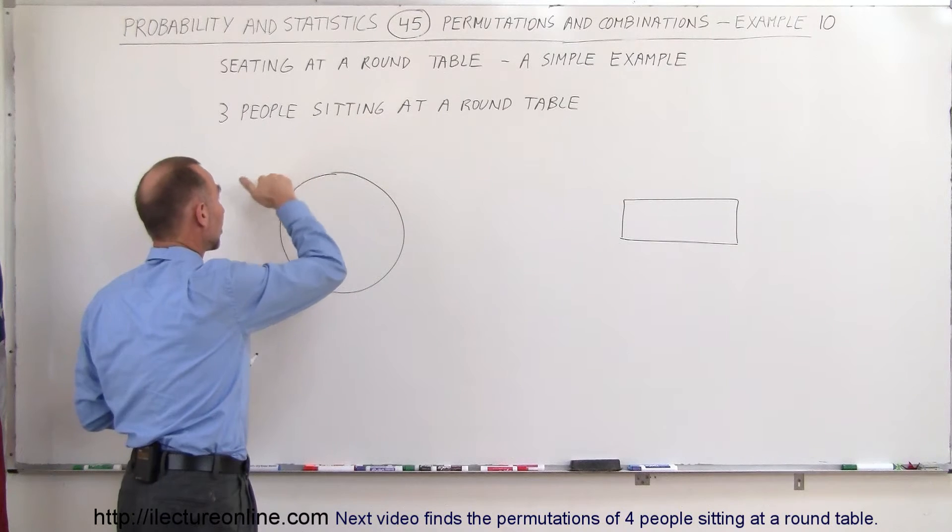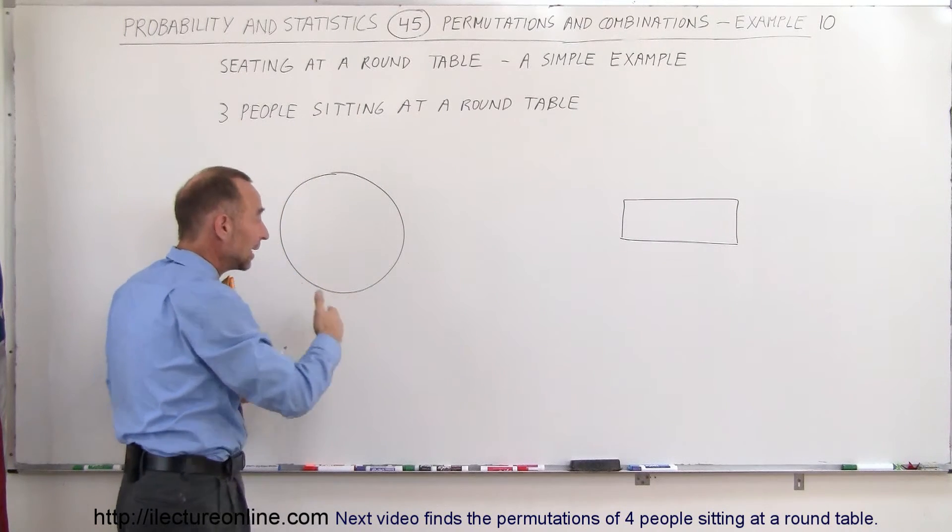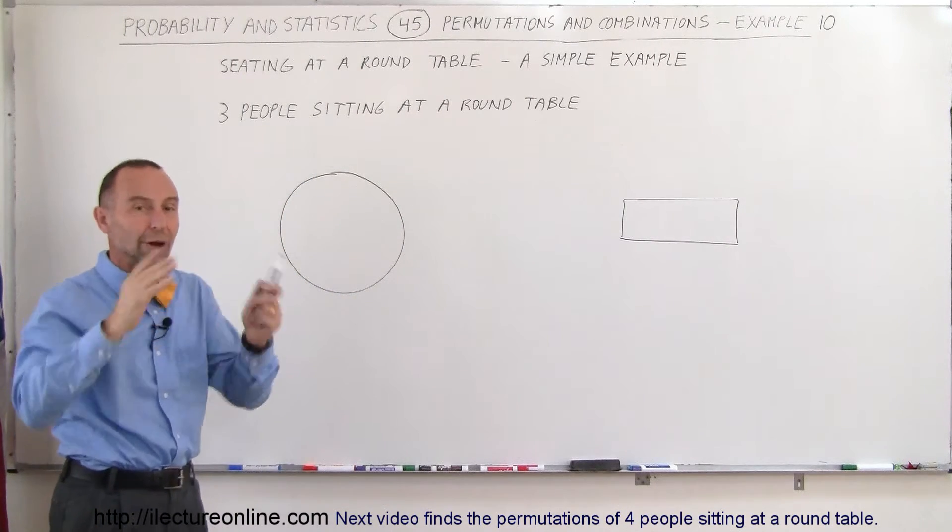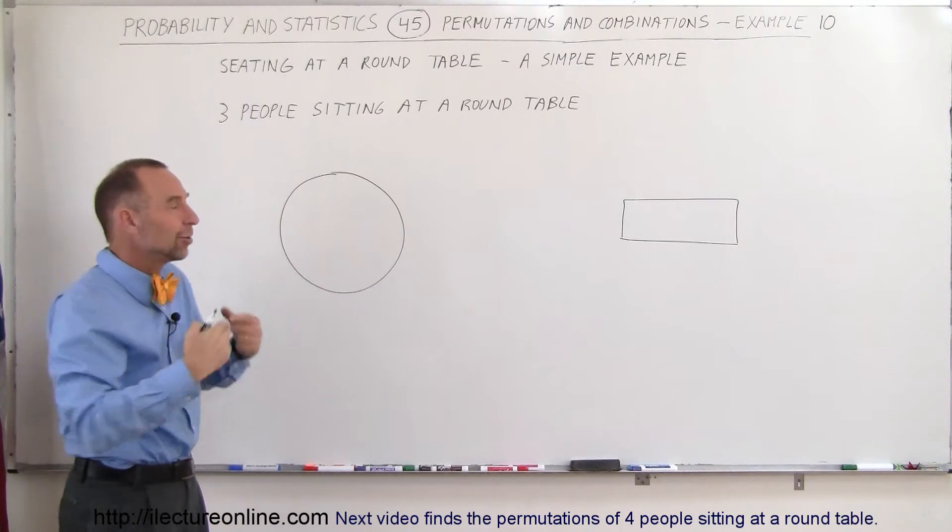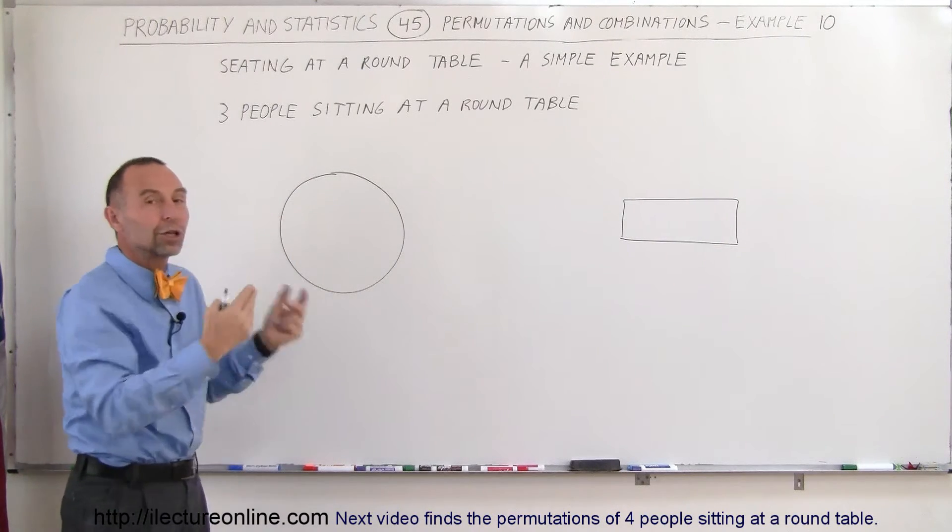you can sit here, there, there, there, there, there. And in essence, because of the geometry of the round table, it makes no difference at all. That first person can sit anywhere, and it doesn't change anything about where the other people can sit.